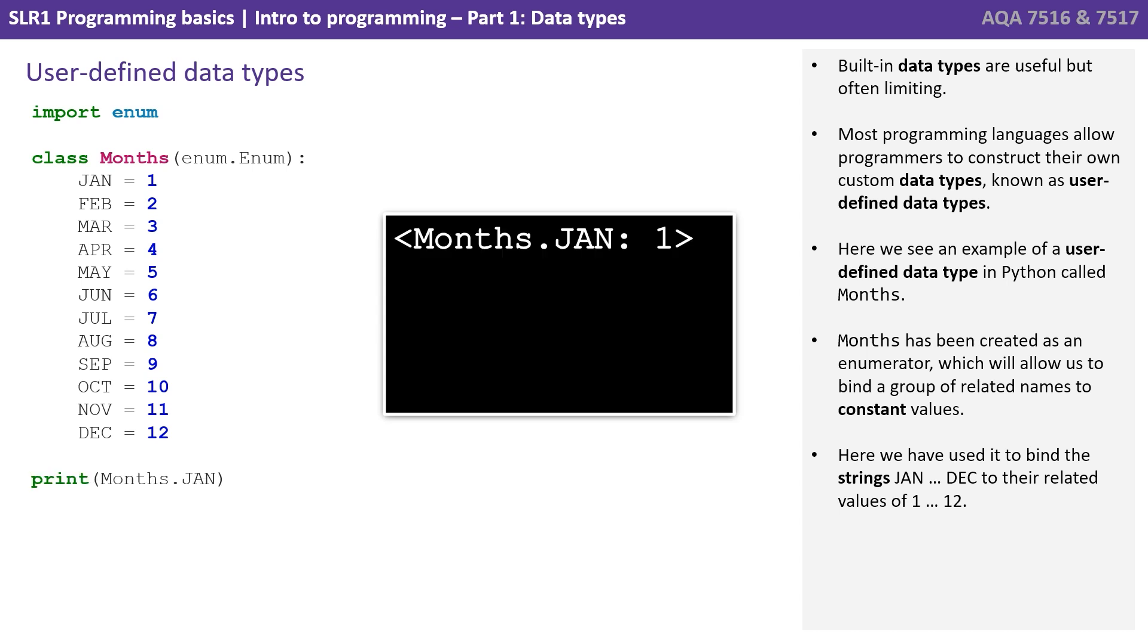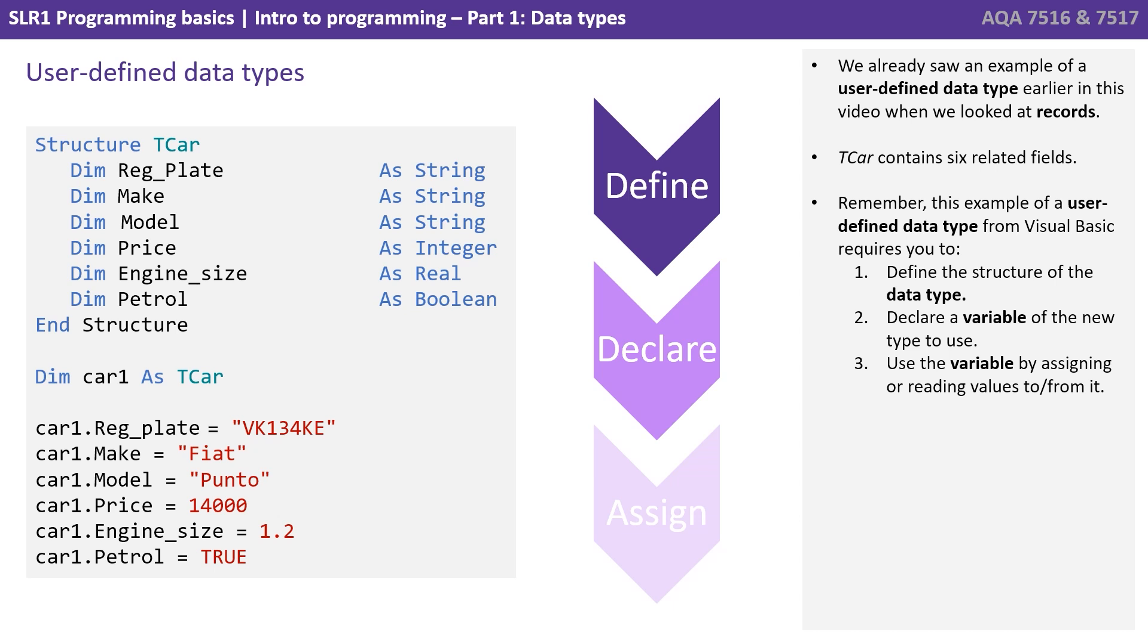We can now perform various operations on our new data type. So here print months dot JAN prints out months dot JAN colon 1. Saying print months dot JAN dot value just returns the value associated with JAN. So 1. If we say print months bracket one bracket dot name, it prints JAN which is associated with the value 1. And finally we can also perform some comparisons. So months JAN dot value greater than months Feb dot value. Well that returns false.